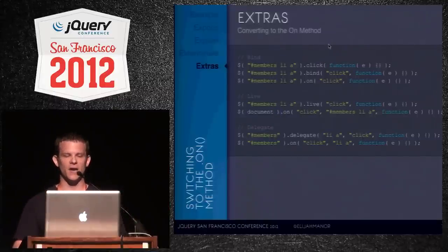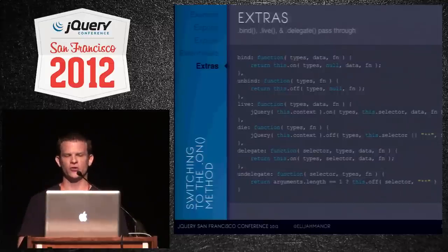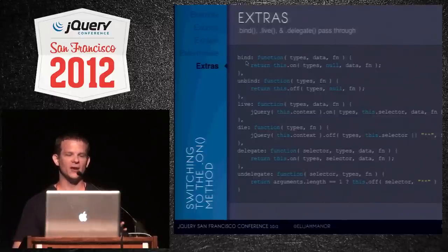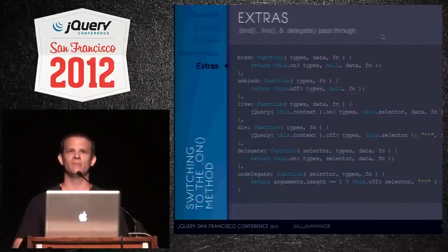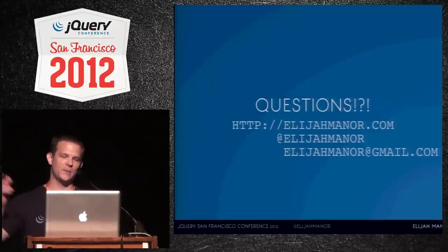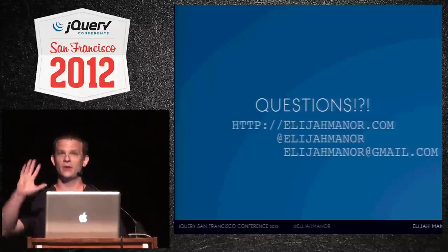Behind the scenes in the jQuery source code, everything calls on anyway. Bind uses on, live uses on, delegate uses on. Unbind is just a one-liner to off, die is a one-liner to off, undelegate is a one-liner to off. So why not just use on and off directly? There's a huge blog post with more detail. Hopefully you learned something — thanks!